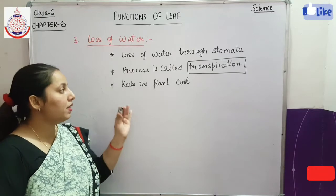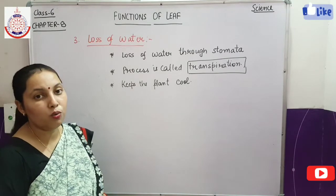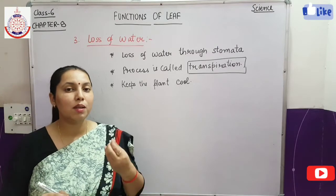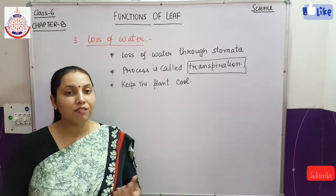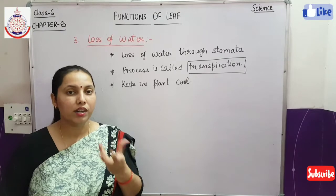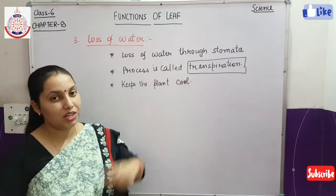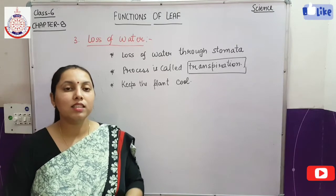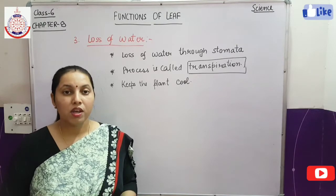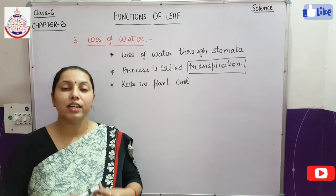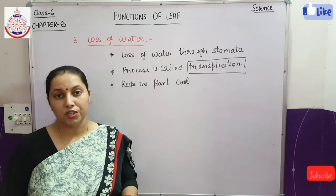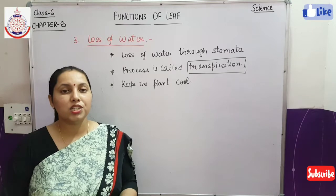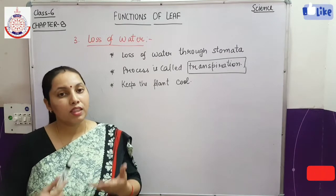We have already studied what transpiration is. So when transpiration happens, it keeps the plant cool. You have also observed that sometimes plants in the evening are very cool — because transpiration happened there. Now we will discuss some modifications of the leaf. Why do we have modifications? To perform better functions, modifications of the leaf are there.